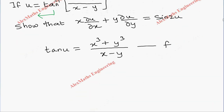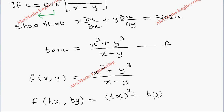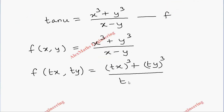We take this as the function f. So the function f is both tan u as well as this expression. Now let's take f as f of x comma y, because it is in terms of x and y. So f(x, y) is x cube plus y cube by x minus y. Now we have to replace x as tx and y as ty, so it will become tx whole cube plus ty whole cube, whole divided by tx minus ty.